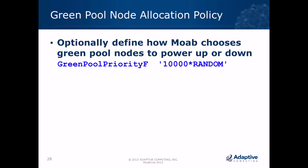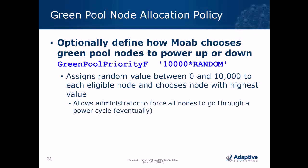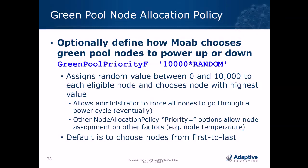Define a green pool priority F policy if you want one. The random value example was requested by an HPC administrator wanting to ensure all nodes cycle through a power cycle over time. You can use any variable names, G metrics, or anything available in the node allocation policy priority function — there are between 20 and 30 of them — to decide which nodes to power off. It could be based on temperature or any available metric. If you don't specify, Moab goes first to last.